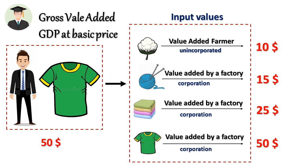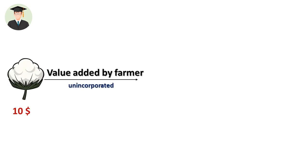Now carefully understand: you are not going to consume cotton, yarn, or clothes. Actually you need a T-shirt. That is the final production; the other productions are intermediate. All producers add some value to this intermediate input and finally produce a consumption good.